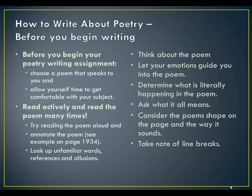I do want to start drawing your attention to a chapter we are going to be talking about next week, which is how to write about poetry. In the back of the book, chapter 43 is 'Writing About a Poem.' Before you begin any poetry writing assignment — including these short poetry assignments we do in class, or online for our conversations and reflection journals — you want to first choose a poem that speaks to you, one you feel some sort of emotional connection to. Allow yourself time to get comfortable with your subject. Spend time reading the poem — don't just read it once, read it a couple of times. Read actively and read the poem many times. Try reading the poem aloud — that really helps you understand a poem. And annotate the poem; see the example on page 1934 for what annotation looks like. It's writing all over the poem in order to understand it.